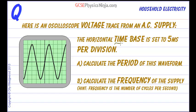Now the horizontal time base is set to 5 milliseconds per division. The time base tells us how much time is represented by each of these divisions. So we know that there's 5 milliseconds for each division. So one of those represents 5 milliseconds in the horizontal axis.